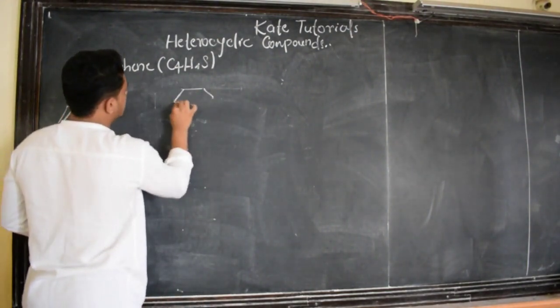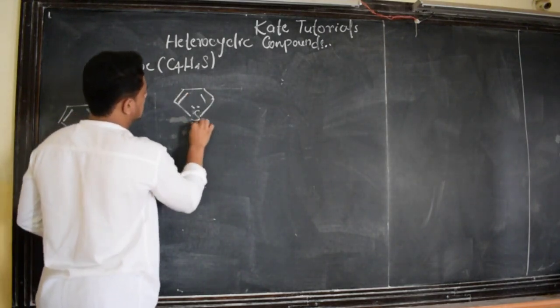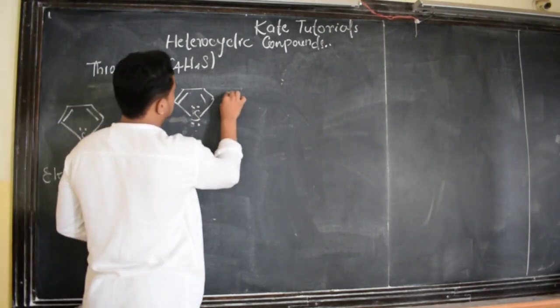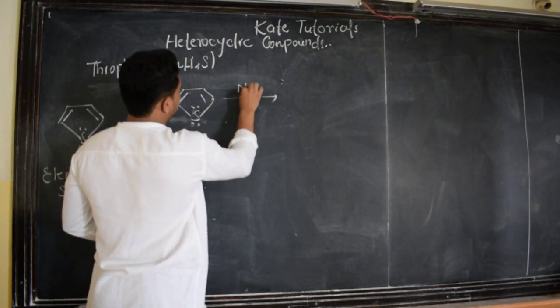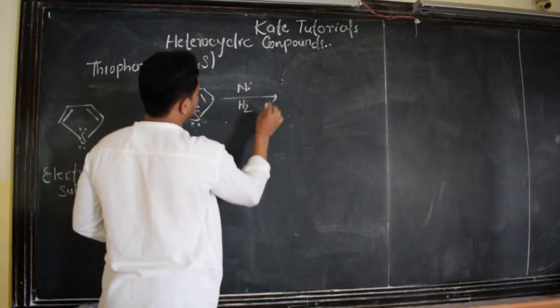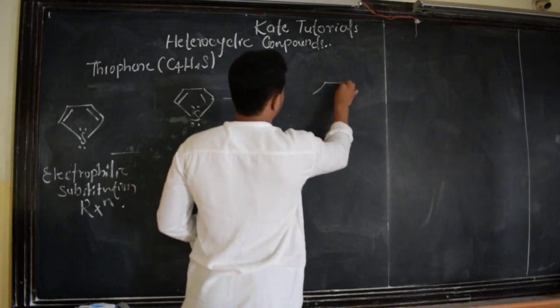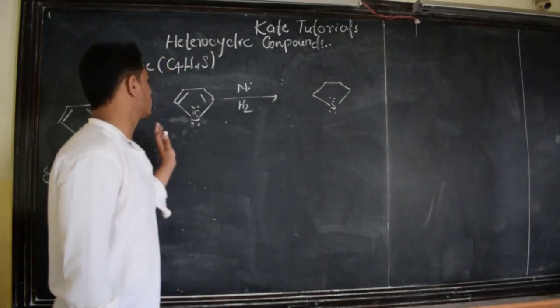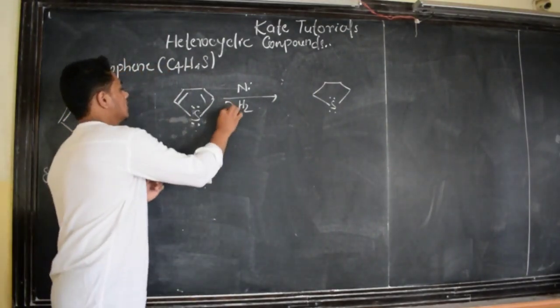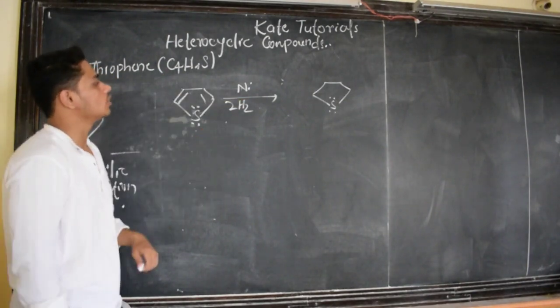This is thiophene. When reacted with nickel in presence of hydrogen heated, nickel hydrogen beta, then we are going to get tetrahydrothiophene. Four hydrogens are going to add here: 1, 2, 3, 4. Tetrahydrothiophene.